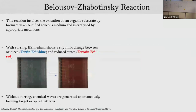For the chemical experiments we use the famous Belousov-Zhabotinsky reaction, which involves the oxidization of an organic substrate. This organic substrate is usually malonic acid, oxidized in the presence of bromate ions in an acidified solution, and you need the right metallic ion catalyst.